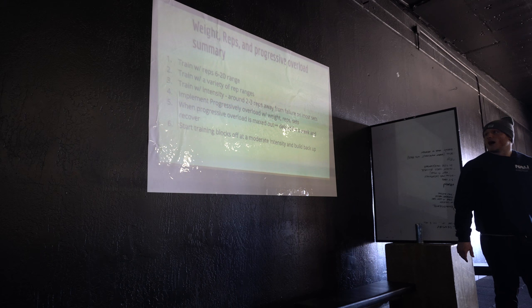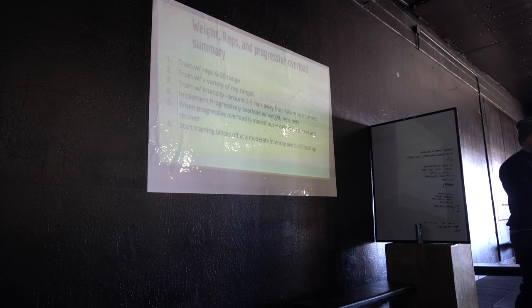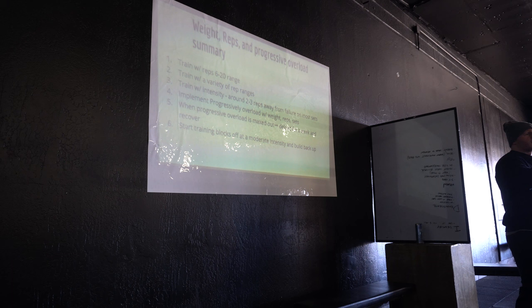Weight, reps, and progressive overload summary: train with reps between six to twenty. Train with a variety of rep ranges that change over time. Train with intensity — about two to three reps away from failure. Implement progressive overload from week to week by increasing weight, sets, or reps. When progressive overload is maxed out, that's when you should deload — drop fatigue, give yourself a week to recover, then start back low and ramp it up again.